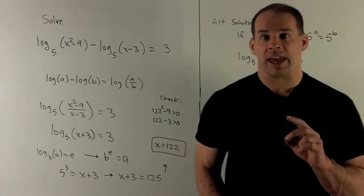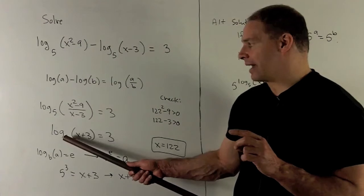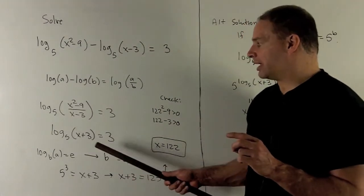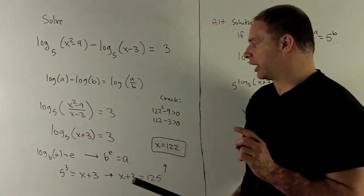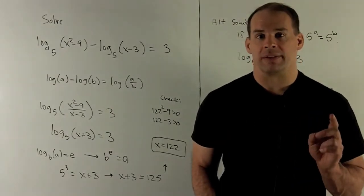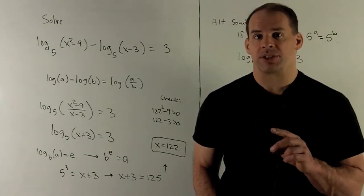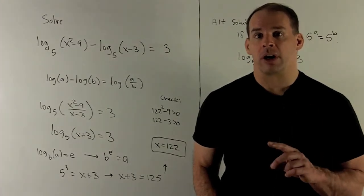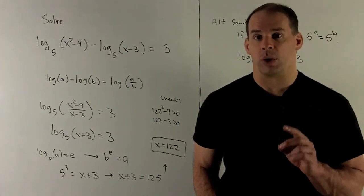So in this case, we're going to write, what's our base? 5 to the exponent 3 is equal to x plus 3. So 5 cubed, that's going to be 125. That's equal to x plus 3. So moving the 3 over, I get x equal to 122.